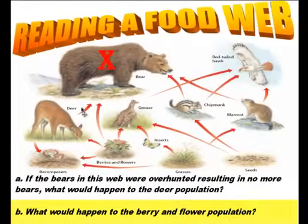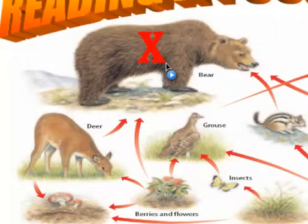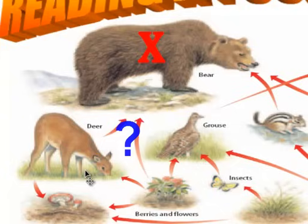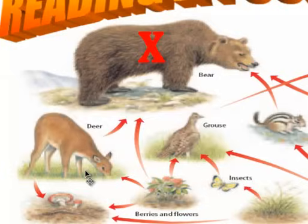Question B: what would happen to the berry and flower population when bears are gone? At first you might think there'd be more berries and flowers since fewer bears are eating them, but bears are omnivores and weren't the main consumers of berries and flowers — the deer were. With no bears eating deer, the deer population grows, and more deer eat the berries and flowers, decimating that population. So the berry and flower population would decrease.